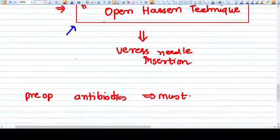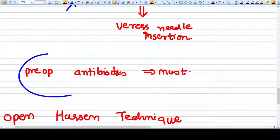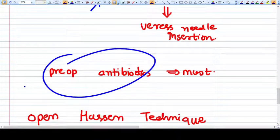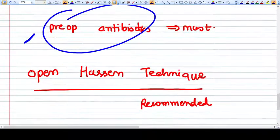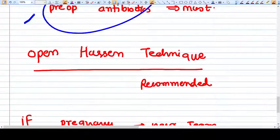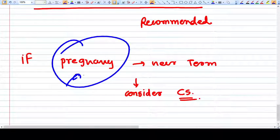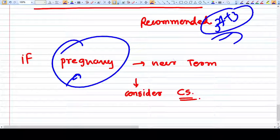This technique should be used by most surgeons. Preoperative antibiotics are a must to decrease the risk of peritonitis, because once peritonitis happens, pregnancy has to be terminated. If pregnancy is near term, suppose 37 plus 3, and the patient comes with appendicitis, go for cesarean section too.